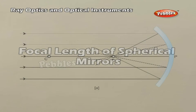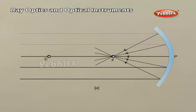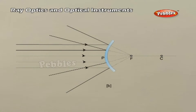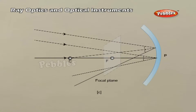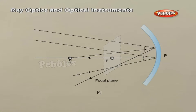Focal length of spherical mirrors. When a parallel beam of light is incident on a concave mirror and a convex mirror, we assume that the rays are paraxial, i.e. they are incident at points close to the pole P of the mirror and make small angles with the principal axis. The reflected rays converge at a point F on the principal axis of a concave mirror; for a convex mirror, the reflected rays appear to diverge from a point F on its principal axis. This is called the principal focus of the mirror. If the parallel paraxial beam of light were incident making some angle with the principal axis, the reflected rays would converge or diverge from a point in a plane through F, normal to the principal axis. This is called the focal plane of the mirror.